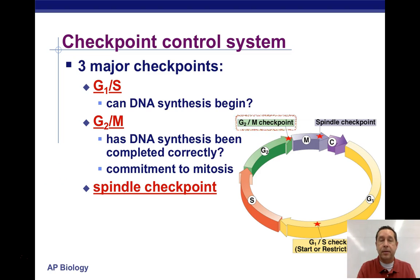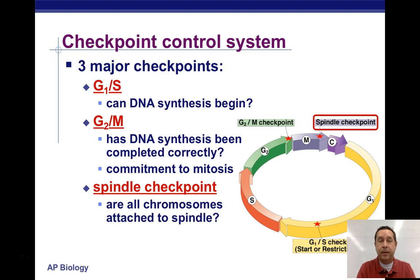The spindle checkpoint happens during mitosis. The spindle connects to the chromosomes and allows them to move. This checkpoint basically ensures all the chromosomes are attached to the spindle, so that as the cell goes through the stages of mitosis, the chromosomes and sister chromatids get separated properly.